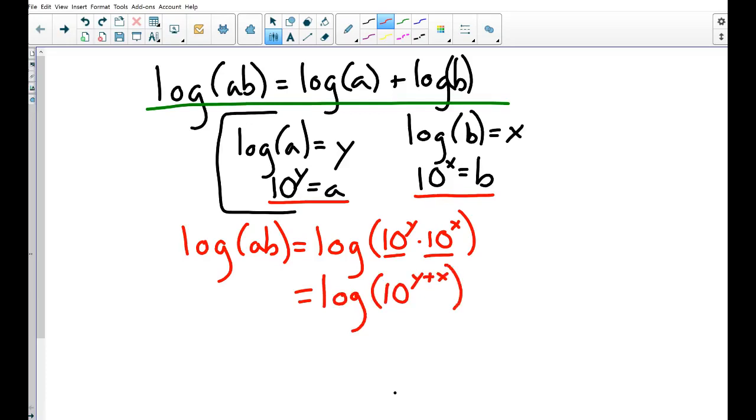And now I've got a log property that says that if I have y plus x up in the power to the argument, I can bring that out to the front as a product, and the log of 10...